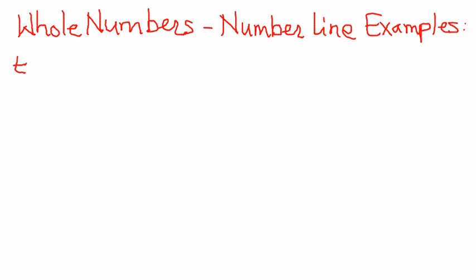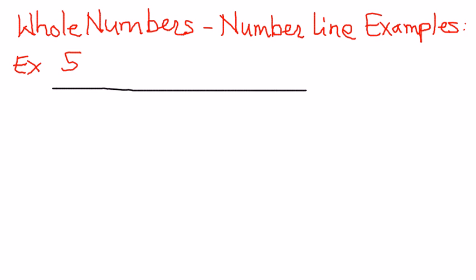Let's take a simple example. Let's say we want to graph 5 on the number line. So what do we do? We draw the number line. We start from 0 and then indicate some points on this number line.